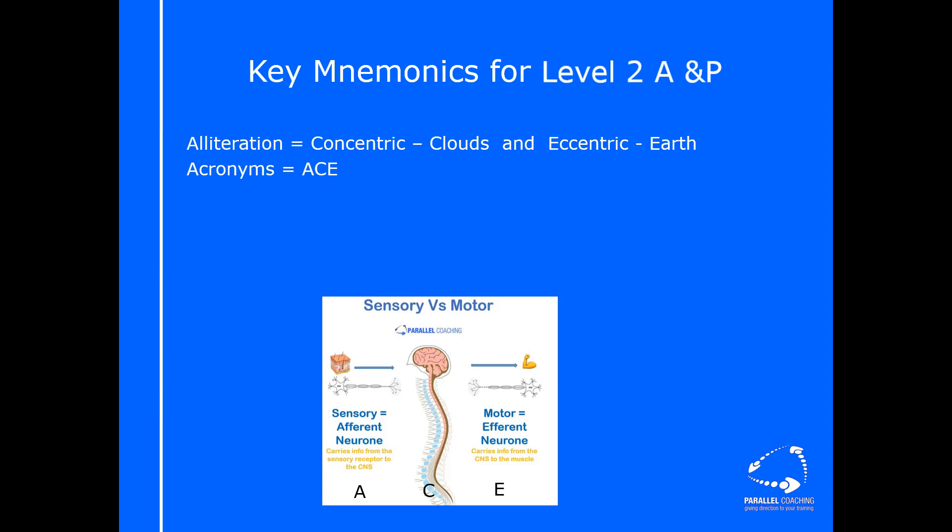An afferent neuron carries information from the sensory receptor to the central nervous system. C in the middle is the central nervous system, made up of the brain and spinal cord. And E is the efferent neuron, which carries the information from the central nervous system to the muscle. The ACE acronym is awesome for remembering this.